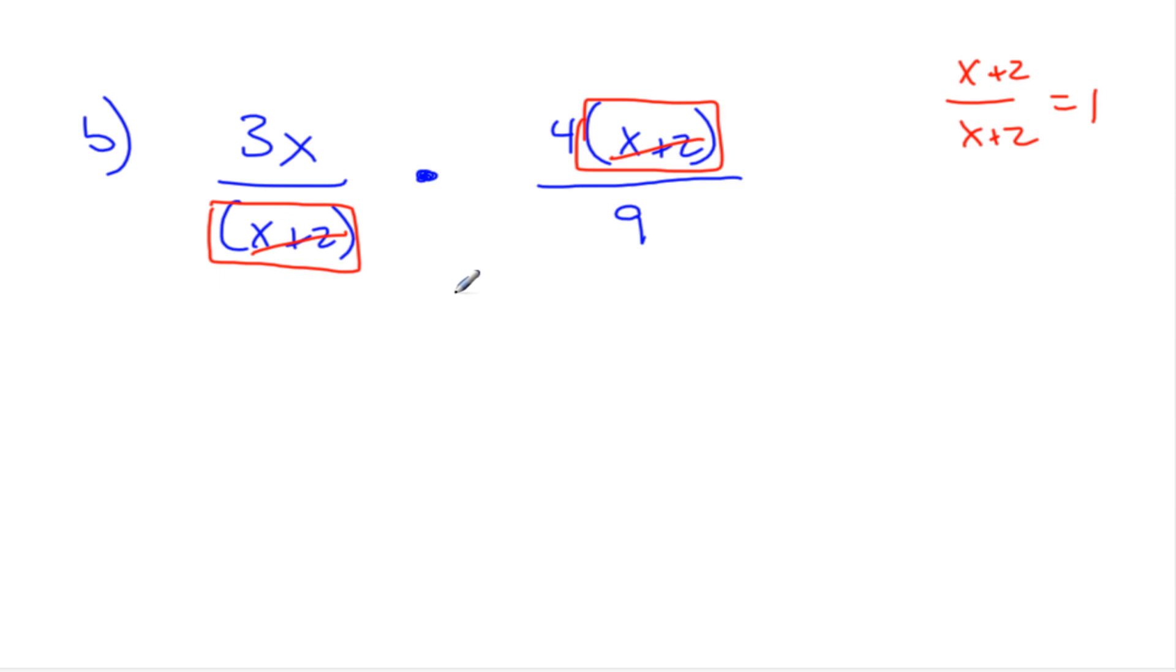Let's see what happens with some expressions, shall we? 3x over x add 2 times 4 brackets x add 2 all over 9. So when we look at this, we have things we can cancel out. If you notice, I have an x plus 2 here and an x plus 2 here. If they're on top of each other, x plus 2 over x plus 2, what does that quantity equal to? So it's something divided by the same thing, so it's 1. So because it's 1, I can scratch those out.